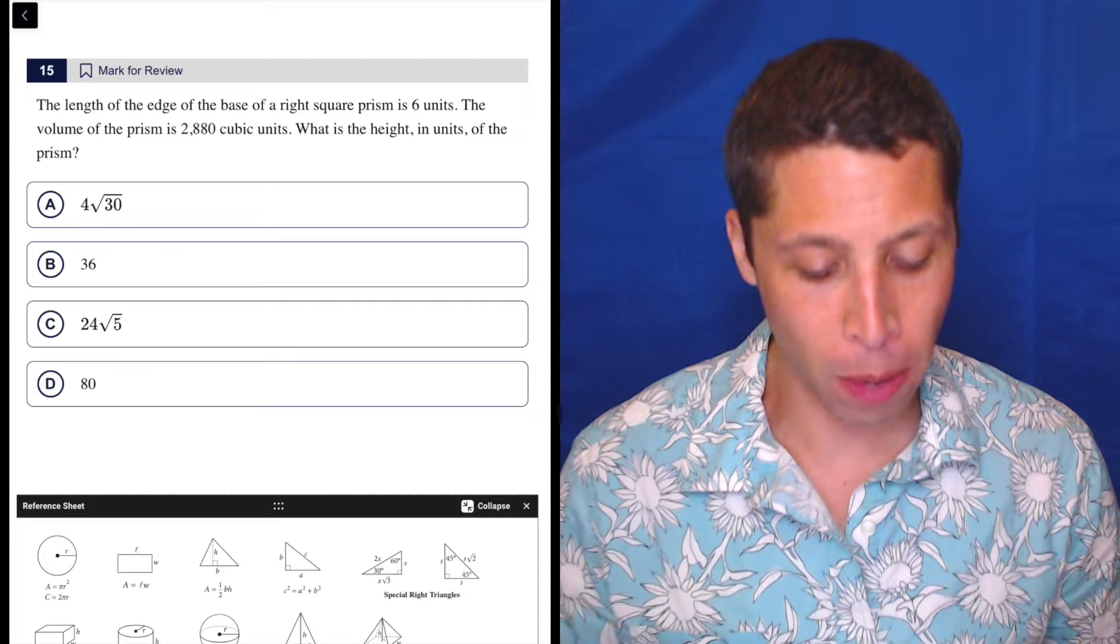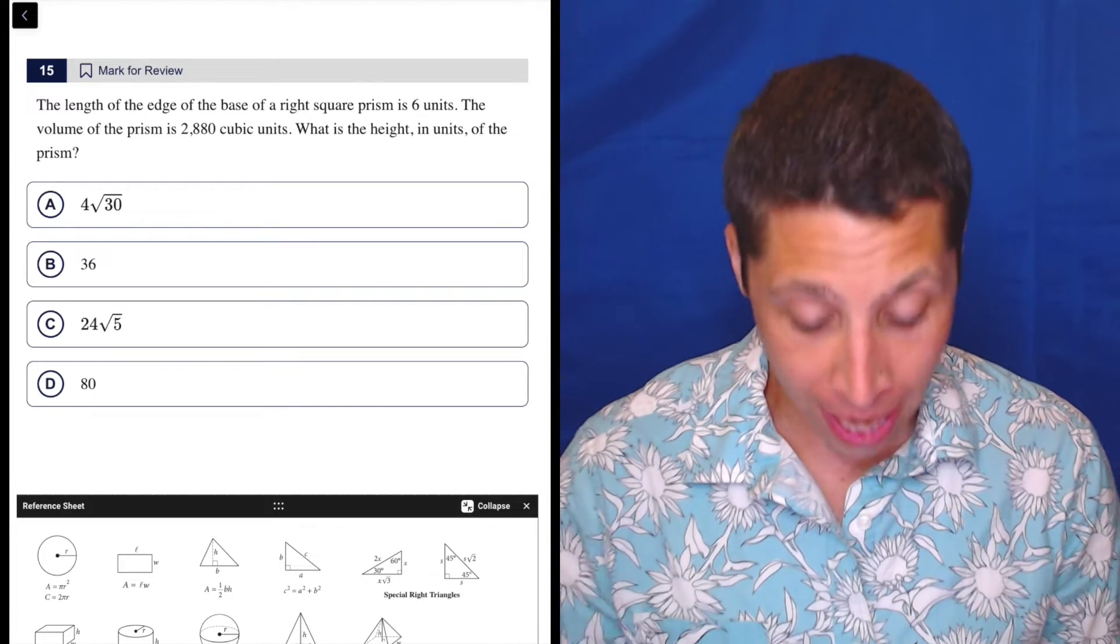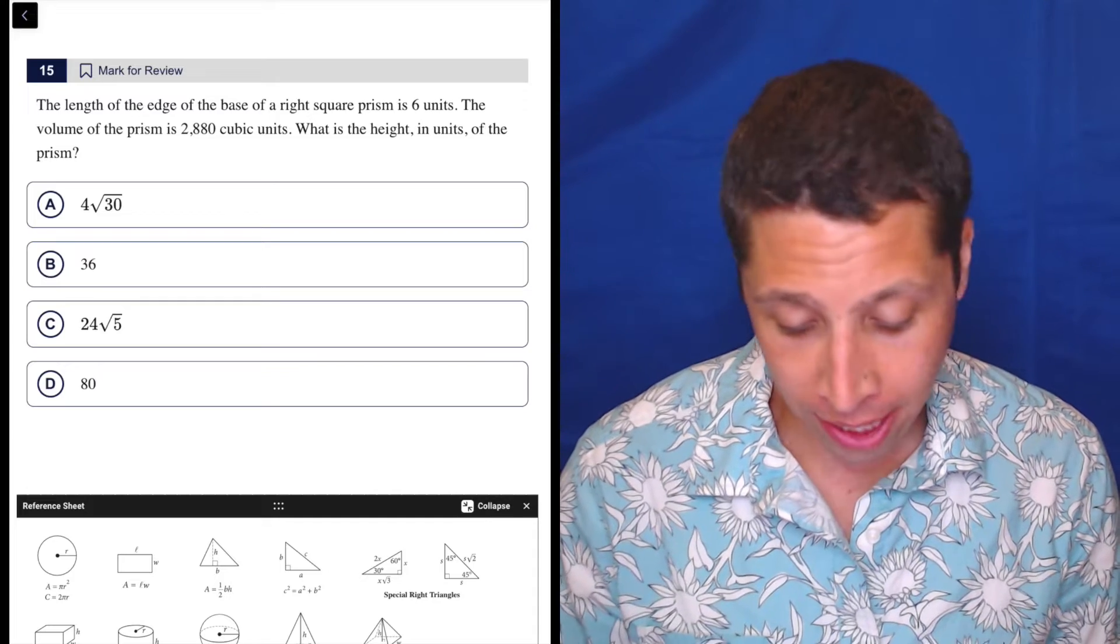The length of the edge at the base of a right-square prism is six units. The volume of the prism is 2,880 cubic units. What is the height in units of the prism?